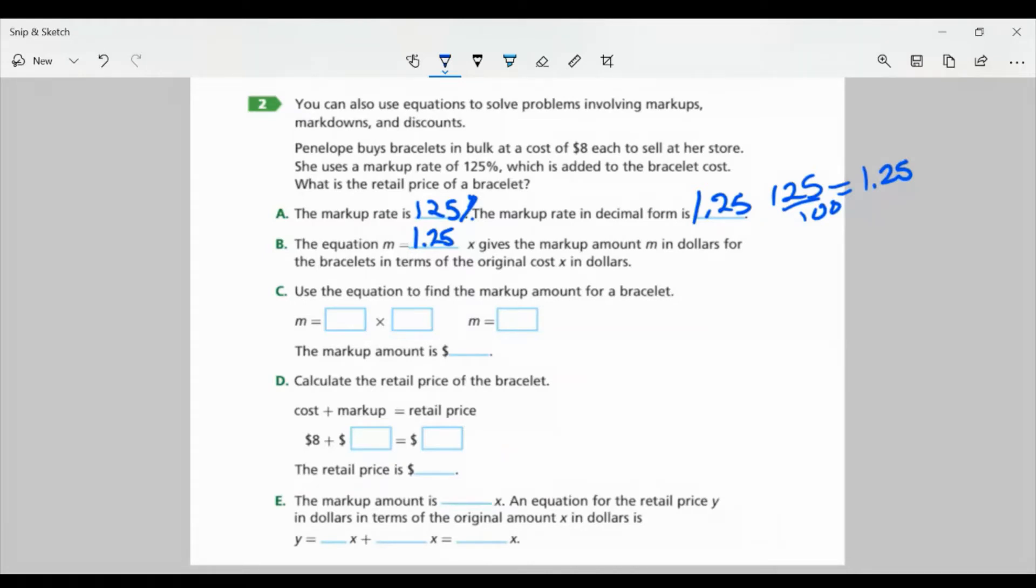So M equals the markup amount, and X is the original cost in dollars. Part C, use the equation to find the markup amount for a bracelet. So we have M equals 1.25, and we're going to multiply it to the cost, which was $8. When we multiply these together, we get 10. So the markup amount is $10.